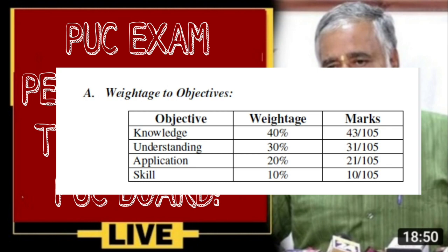If you have 4 types of understanding and application skills, you can divide these 4 types. If you have 4 types of knowledge, you can understand each other.